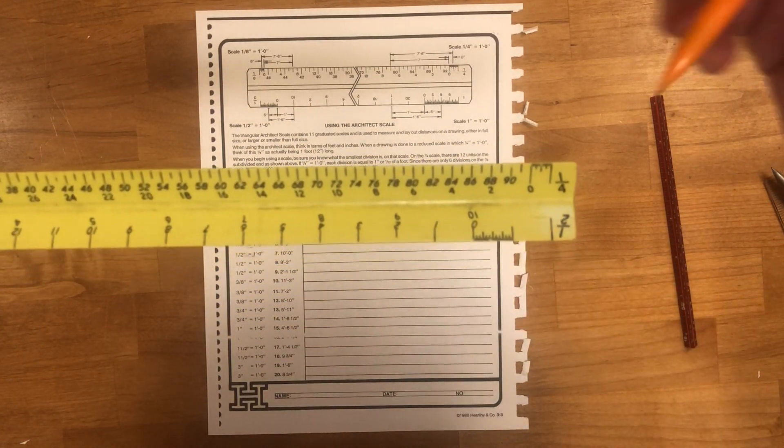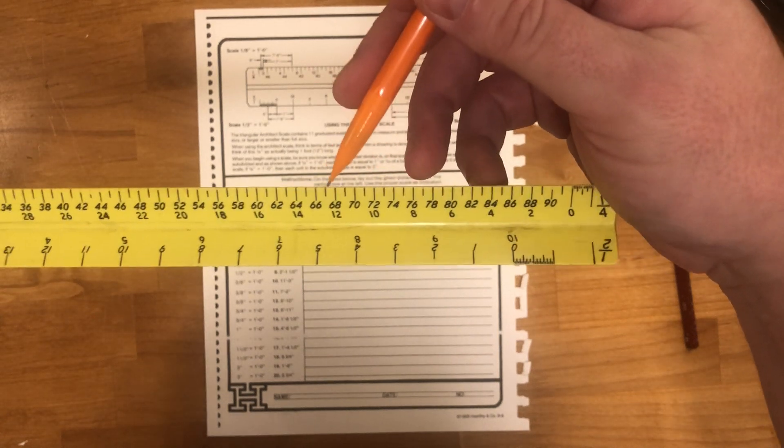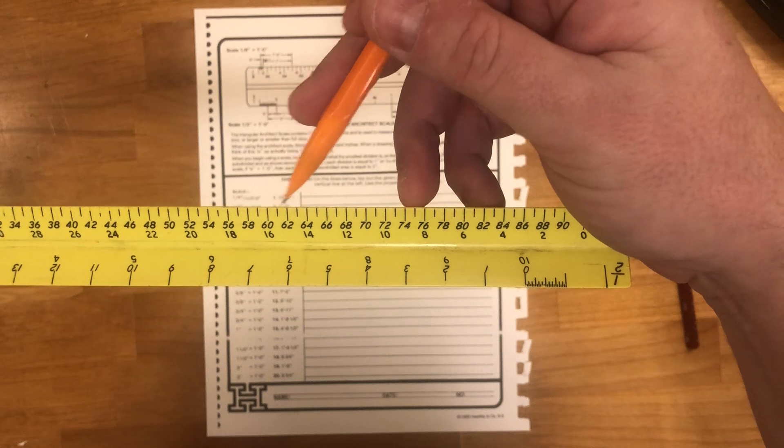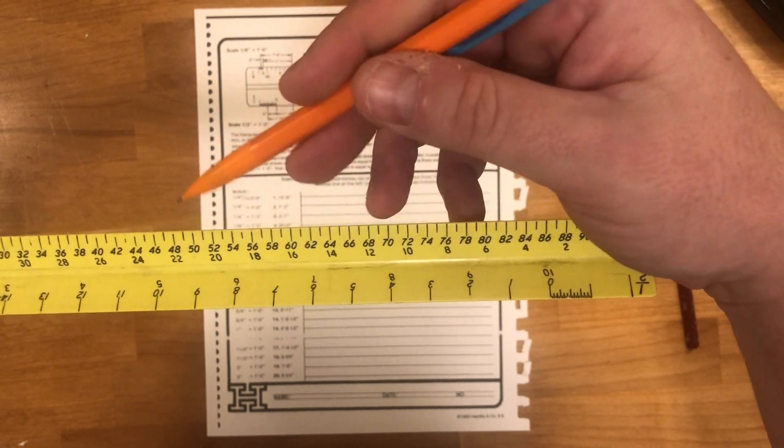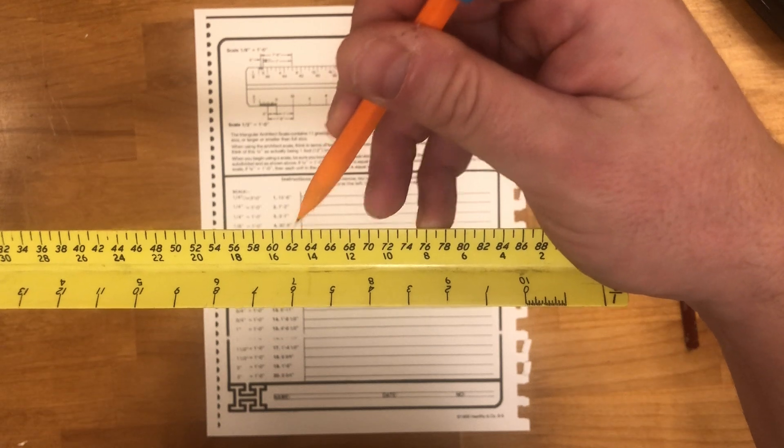So we're starting from this side: 2, 4, 6, 8, 10, 12, 14. Now you can't see a 15 here because this guy's in the way from the scale on the other side. 14, 15, so that's our 15 foot mark right there.